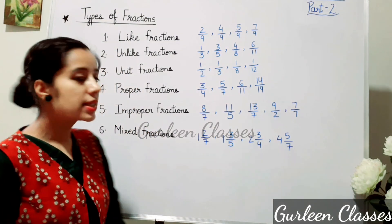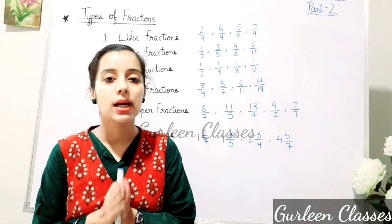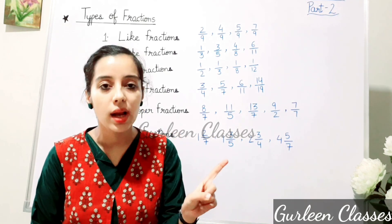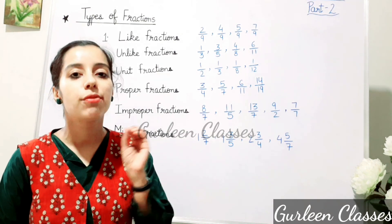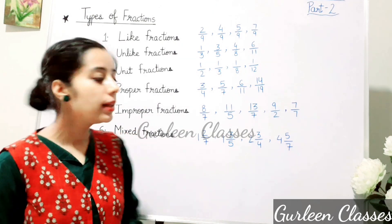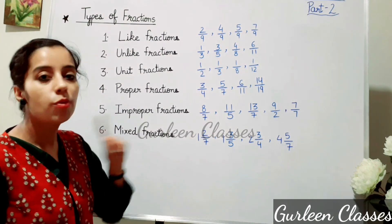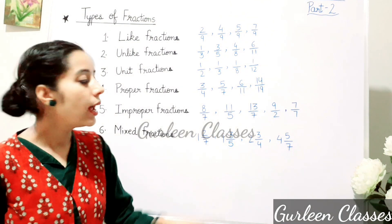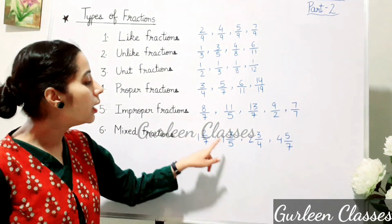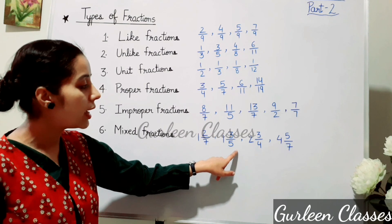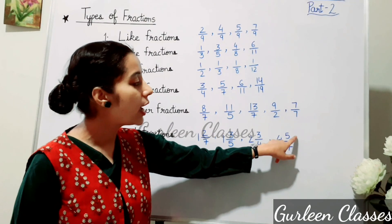Next, mixed fractions. When an improper fraction is written as a combination of a whole number and a proper fraction, it is called a mixed fraction. For example: 1 whole 2/7 — here 1 is the whole number and 2/7 is the proper fraction. Other examples: 1 whole 3/5, 2 whole 3/4, and 4 whole 5/7.